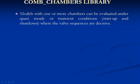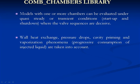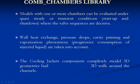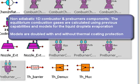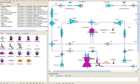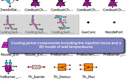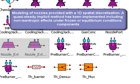The Combustion Chamber Library. Models with one or more chambers can be evaluated under quasi-steady or transient conditions at start-up and shut-down, when the valve sequence is decisive. Wall heat exchange, pressure drops, cavity priming, and vaporization phenomena are taken into account. The cooling jacket components are completely modeled in 3D geometries built by means of several 3D walls around the channels. For non-adiabatic 1D combustor and preburner components, the equilibrium combustion gases are calculated using the above-mentioned capabilities, as well as models for the evaporation of liquid droplets. Each model comes in two types: with and without thermal coating protection. The cooling jacket components calculate the injection torus and a 3D model of wall temperatures. Nozzle components are provided with a 1D spatial discretization.